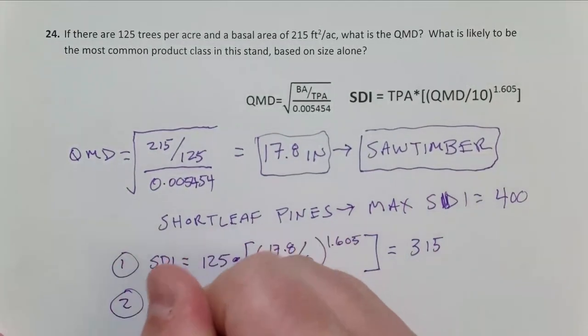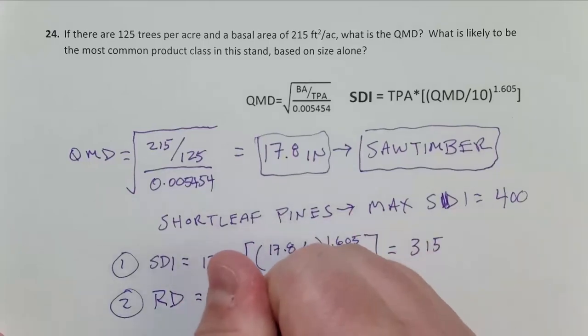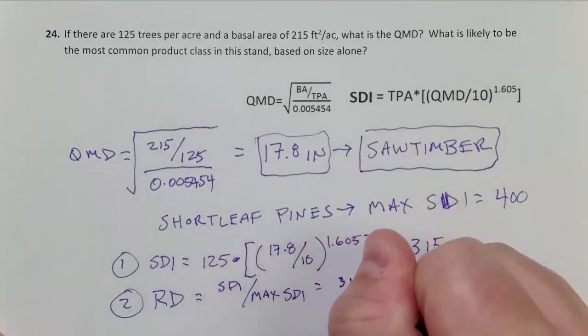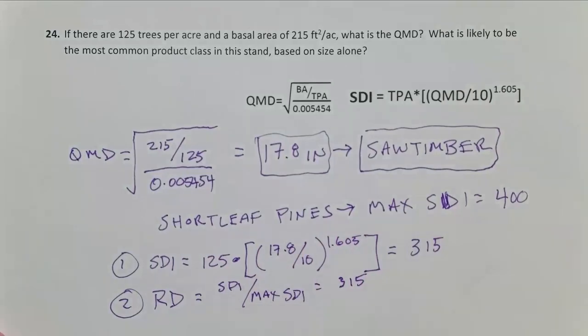Step two, calculate relative density. And that's going to be SDI over max SDI. So here my SDI is 315, my max SDI I know is 400 for short-leaf pine. And this tells me, this will actually give you 0.79. I always then just multiply by 100 to get 79%.